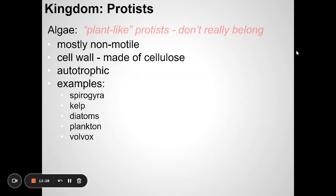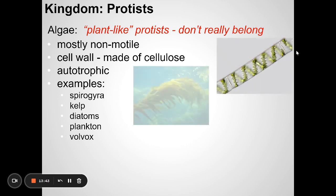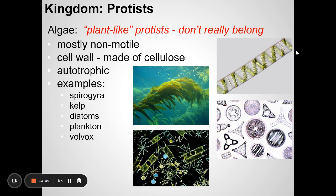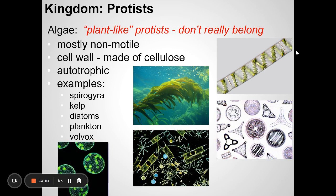There are also plant-like protists. They don't really move and they have a cell wall made of cellulose. These include things like spirogyra, kelp, diatoms that make a shell, and volvox — all strange organisms, but they're plant-like protists.